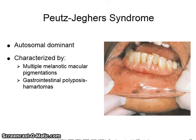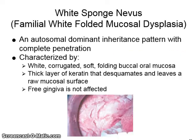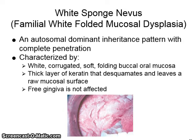Peutz-Jeghers syndrome is characterized by multiple melanotic macular pigmentations and gastrointestinal polyposis and hematomas. White sponge nevus, or familial white folded mucosal dysplasia, is a dominant inheritance pattern with complete penetrance, characterized by white, corrugated, soft folding oral mucosa with a thick layer of keratin that desquamates and leaves a raw mucosal surface. The free gingiva is not affected.